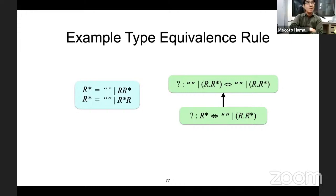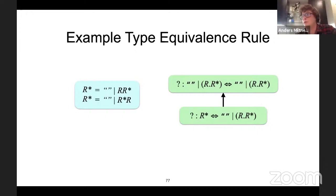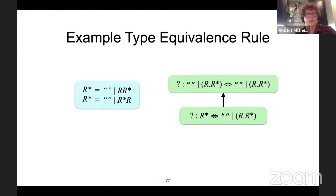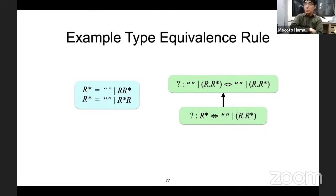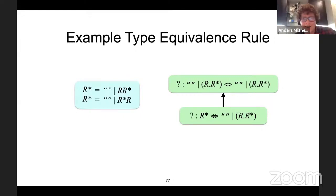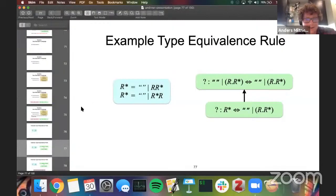That's part of the reason why we use the diamond property in a number of locations instead of local confluence — because local confluence only really works when you have a terminating system. So it seems the sufficient proof doesn't work for non-terminating systems. Maybe we can talk about it offline; maybe it's been considered.